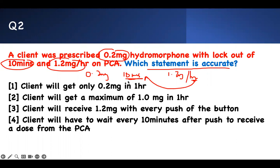There are 60 minutes in an hour. If the lockout is 10 minutes, then 60 divided by 10 equals 6. So the patient can get a dose only six times per hour. When I push at one minute, I have to wait — the lockout means 10 minutes before I can get something. I can push at 5 minutes, 6, 7 minutes — I'm not getting anything. I have to wait the full 10 minutes every time I push.